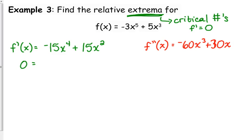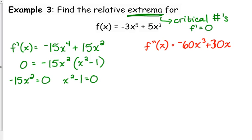When we set our derivative equal to 0, we need to factor out negative 15x squared, giving us positive x squared minus 1. Setting both factors equal to 0, we get x equals 0, and x squared equals 1, so x equals positive and negative 1. Now, rather than setting up a number line, since we know the second derivative test, we can plug our critical points into the second derivative and just check their signs.